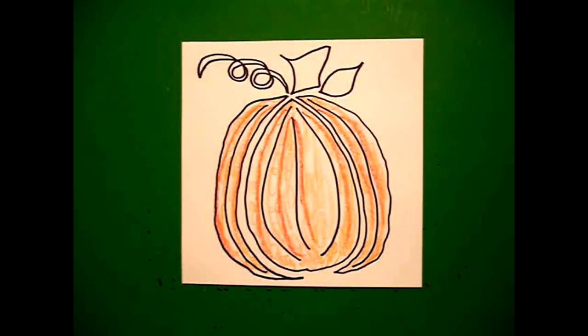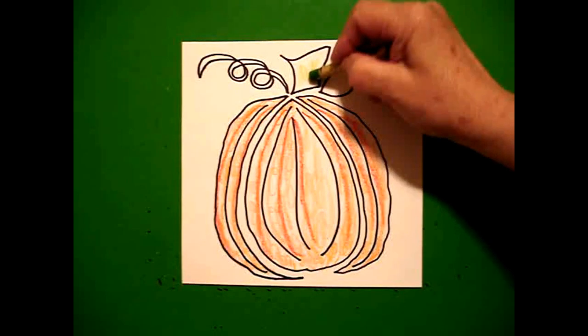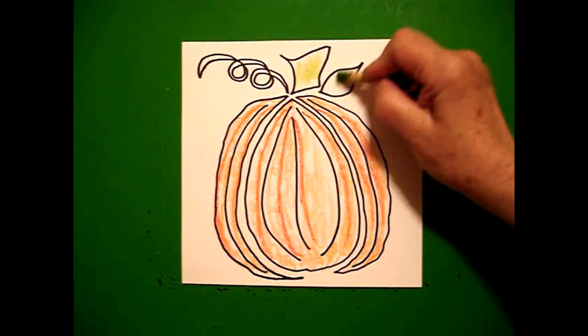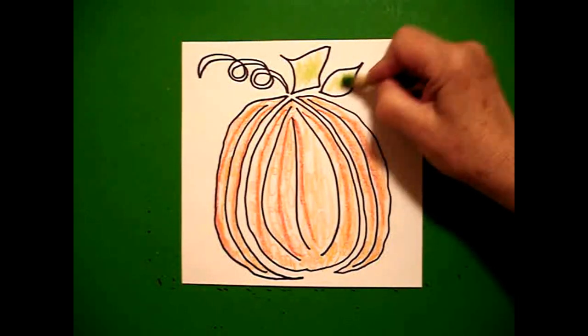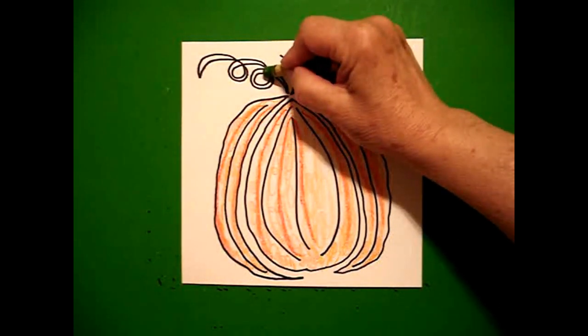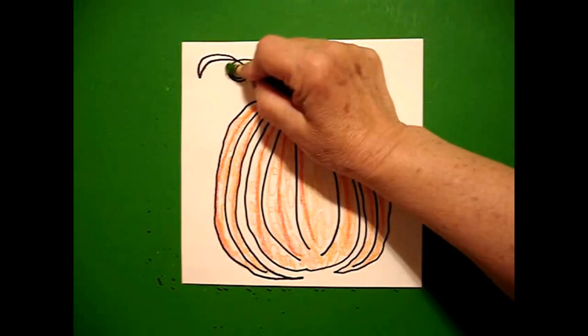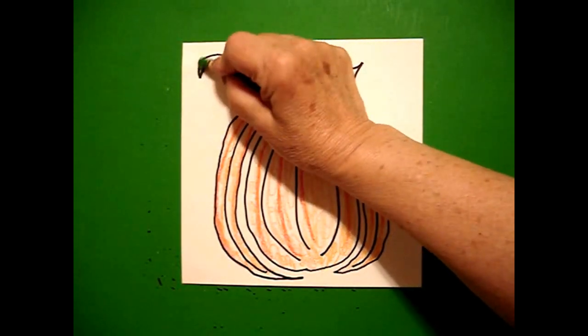Okay, now I come back in, and with my light green, I'm going to color the inside sections of my stem, my leaf, and I'm going to start off my spiral with just a little bit of that light green so I can see it, but not all colored in.